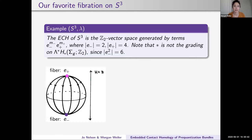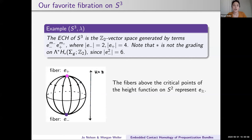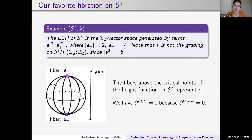Our favorite example is S³. As has been known for a while, the ECH of S³ is Z mod 2 in every non-negative even integer grading, and it's generated by terms E minus to the M minus, E plus to the M plus. The grading of E minus is 2, and the grading of E plus is 4. The grading is not the grading on the exterior algebra because the grading of E minus squared is 6, not 4. If you choose the height function on S² as your perturbation H, then the fibers above the minimum and the maximum represent E plus and E minus. The Morse differential is zero—there are no index one critical points—so the ECH differential is also zero.